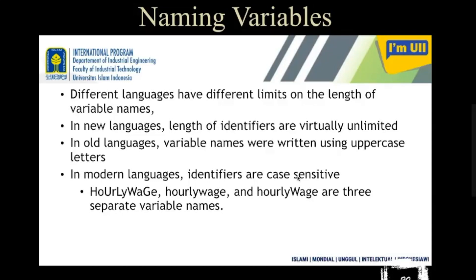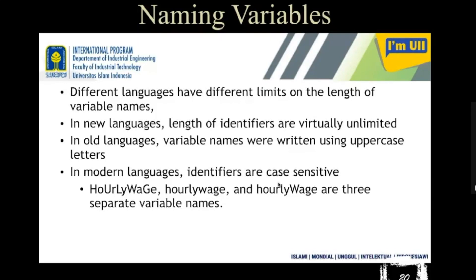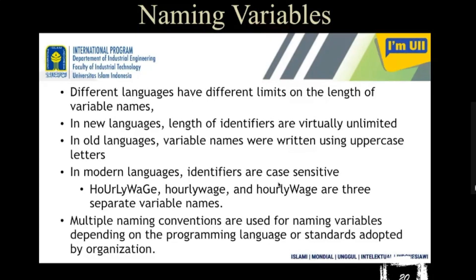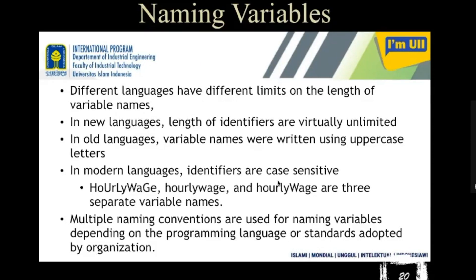In modern languages like Python, Java, and C, they are case sensitive. You cannot write the same word with different cases — uppercase or lowercase — to identify the same variable. If you do that, the compiler will identify them as two different variable names, two different identifiers.